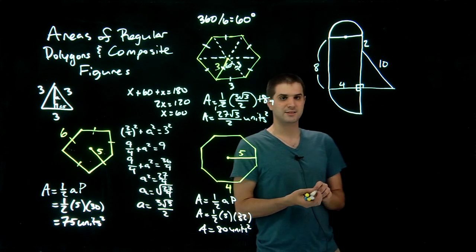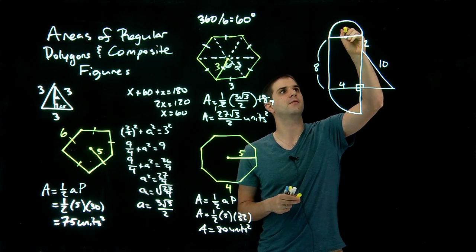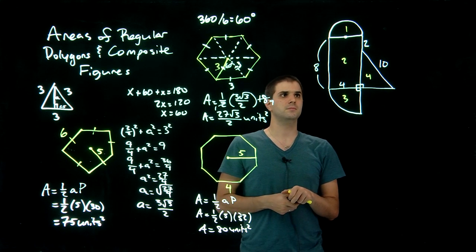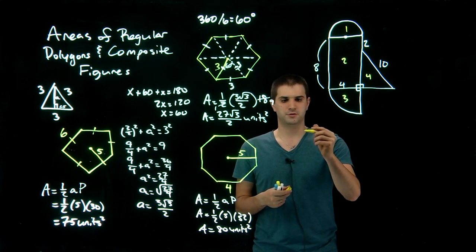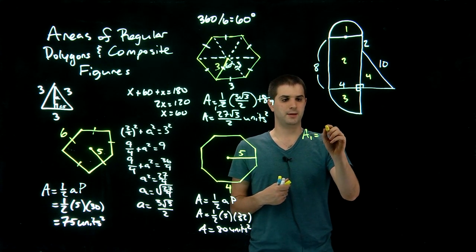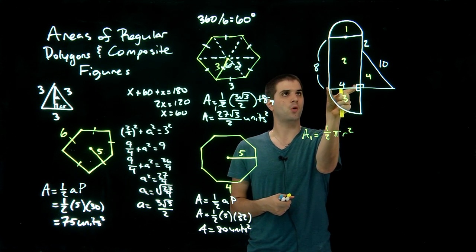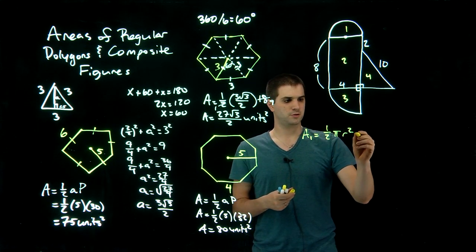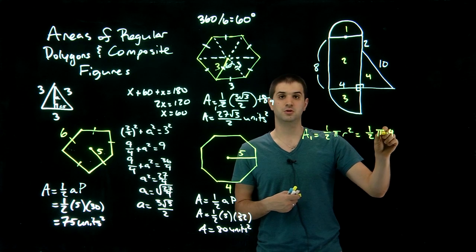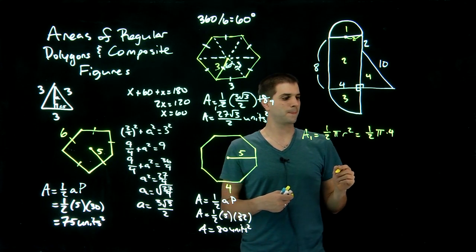Finally, we have this composite figure. We need to figure out the area of each of the four shapes. Starting with shape 1 — it looks like a semicircle, so the area equals one-half pi r squared. If the diameter is 4, then r equals 2. That gives us one-half times pi times 4, which equals 2pi.